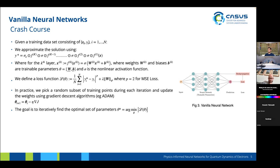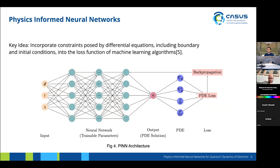In this case, the loss function is based on the difference, and we assume we have some ground truth. But what if we don't? Here comes physics-informed neural networks, where we use the network as a solver for a partial differential equation and convert the solution of the equation into an optimization problem.